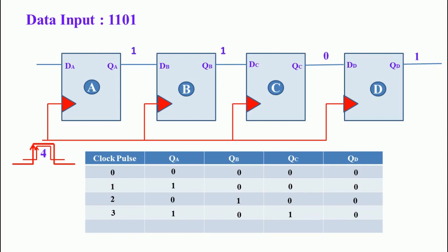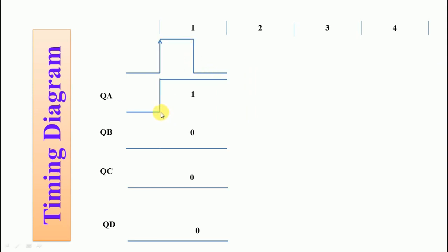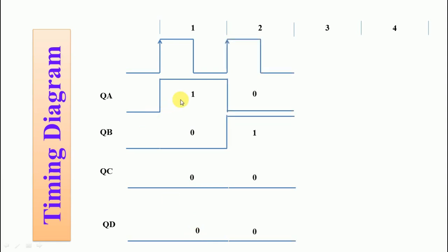With the fourth clock pulse, the final input data is entered, and the first input data bit now appears at the output of the fourth flip-flop. The 1 is shifted here, the 0 is shifted here, and the 1 is shifted here — this is the final input data output. This is the timing diagram of the serial-in serial-out shift registers. Using positive-edge clock pulses, after the first clock pulse the first data bit is entered and all other flip-flop outputs are zero.